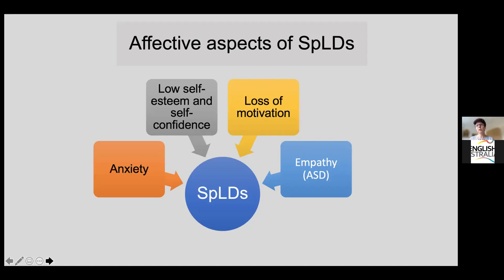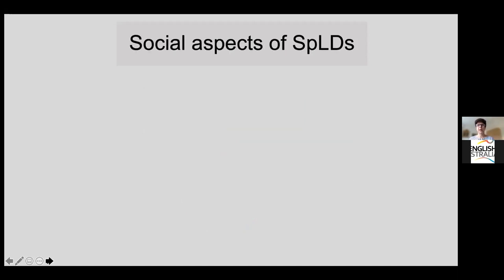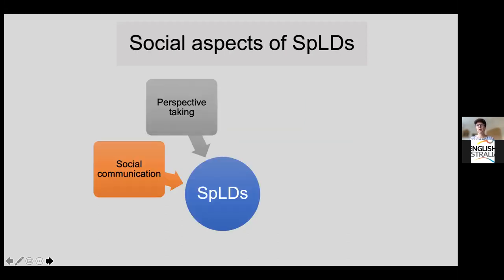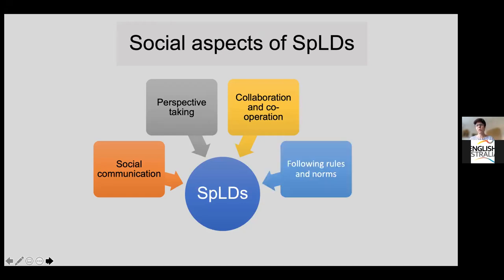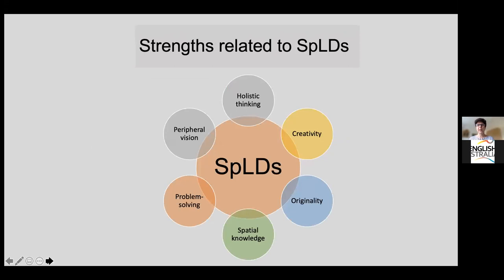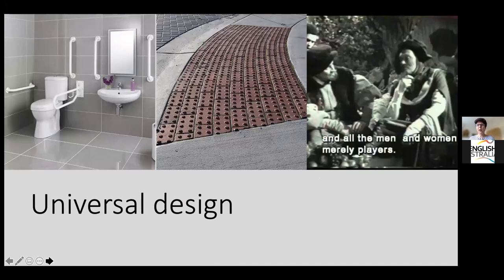Affective aspects of SPLDs are also important: students may be quite anxious due to their learning difficulties and negative learning experiences, they may have low self-esteem and self-confidence, and may lose motivation to learn another language. Students with autistic spectrum disorder may also have challenges empathizing with colleagues and teachers. Social aspects include difficulties with social communication, taking perspective, collaboration, following rules and norms — all things we need to consider. And we must remember that students with SPLDs also have strengths, such as originality and creativity.